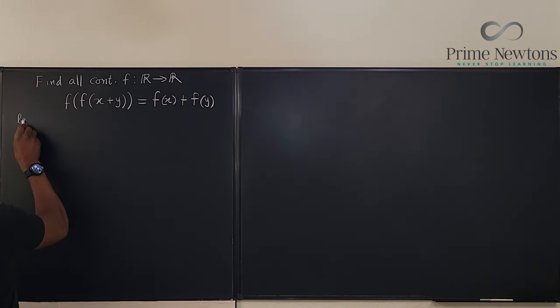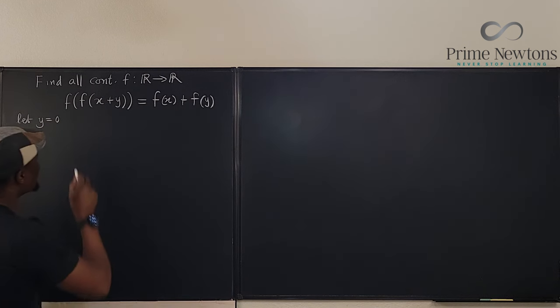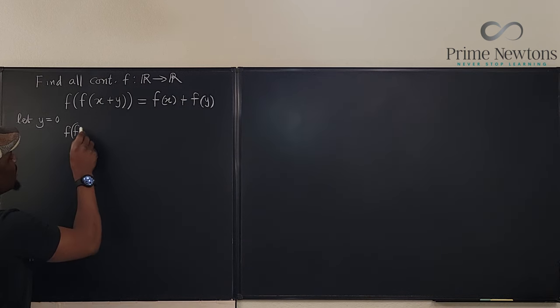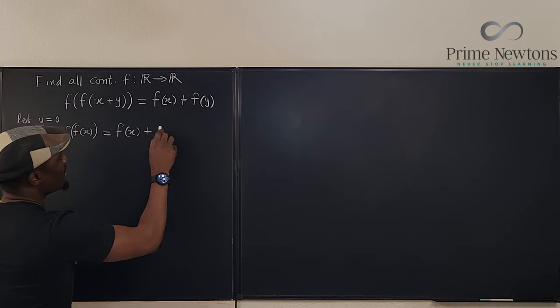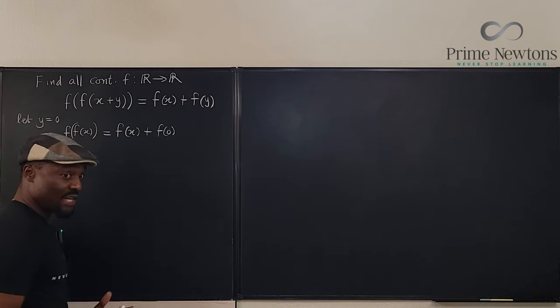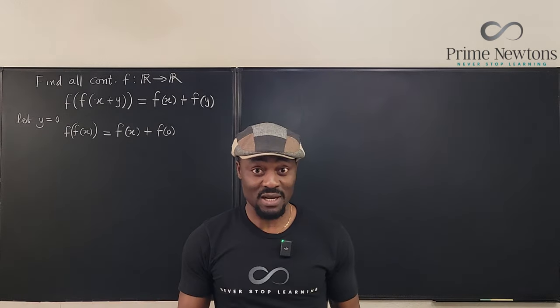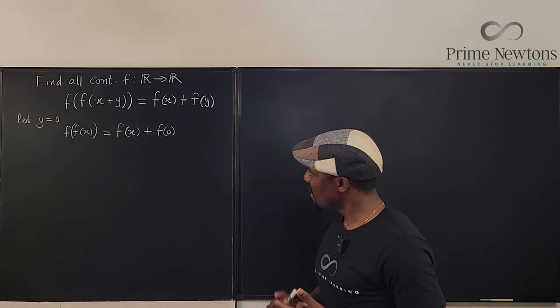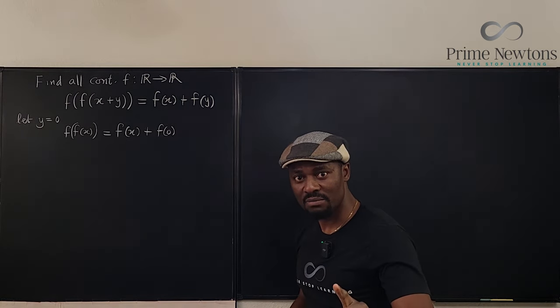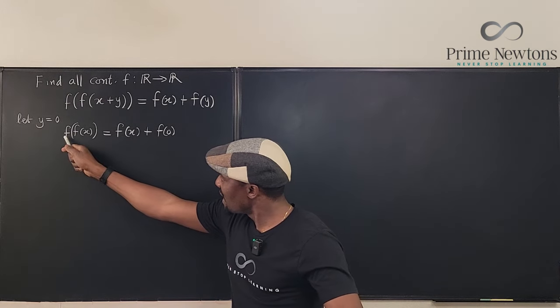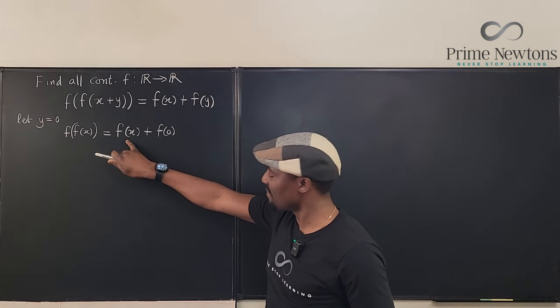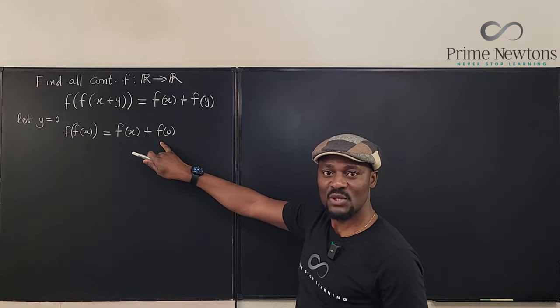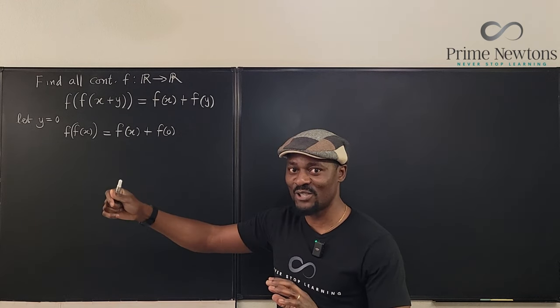Let y be equal to zero. So here I'm going to have f of f of x plus zero is just going to be x. And I'm going to have f of x plus this is f of zero. If only I knew what f of zero would be, then I'll be almost done. But I don't know what f of zero is. But something has shown up. Let me try and switch it. Let's try and do y.